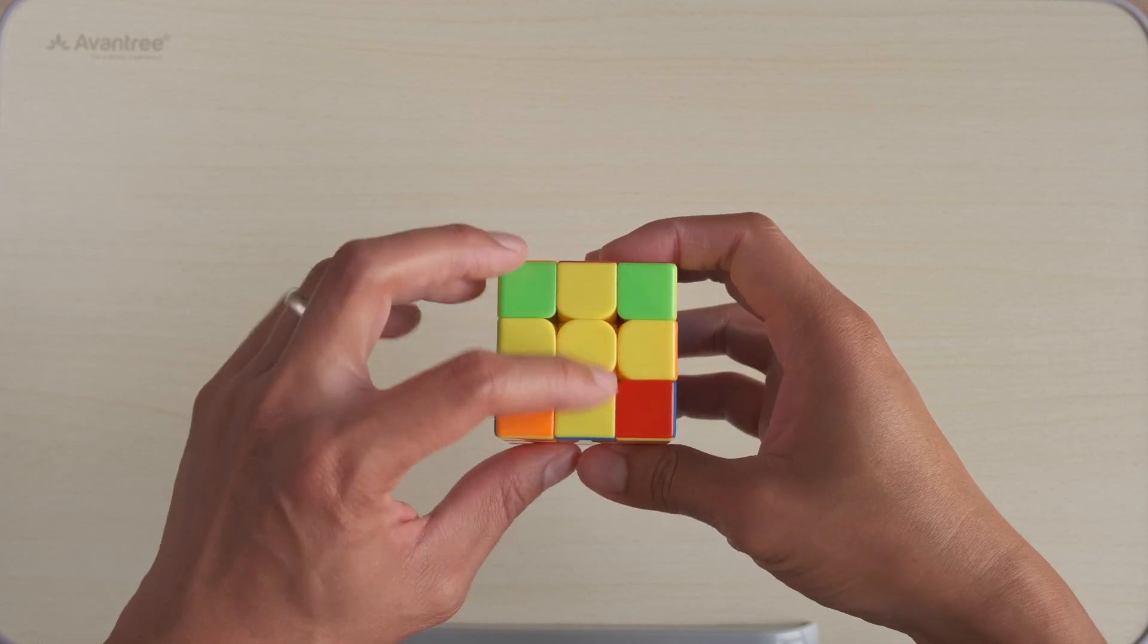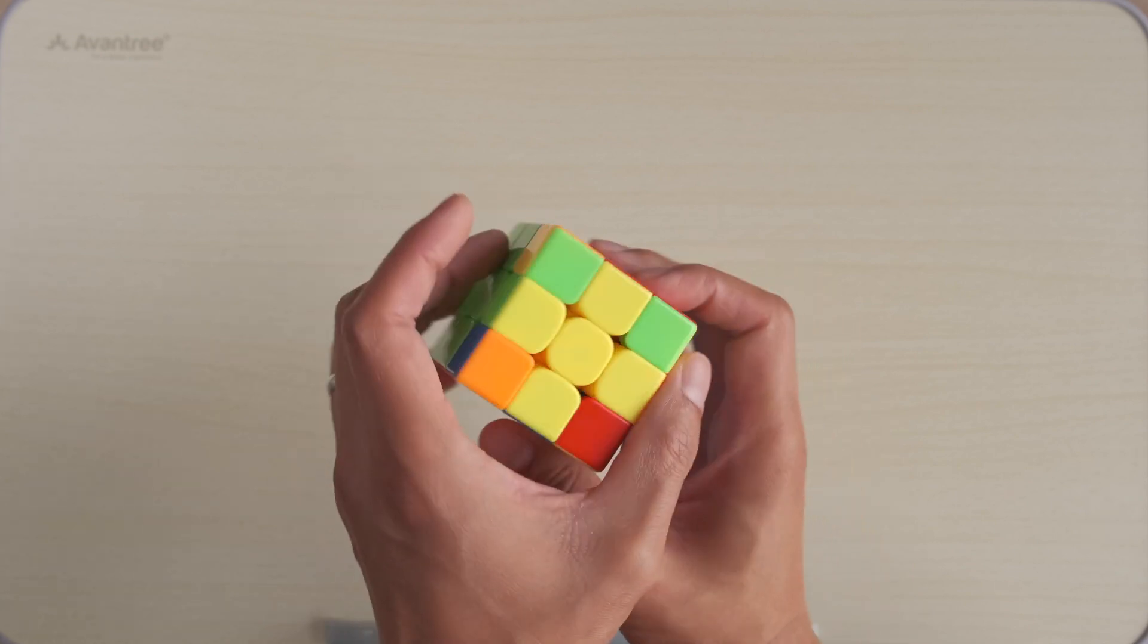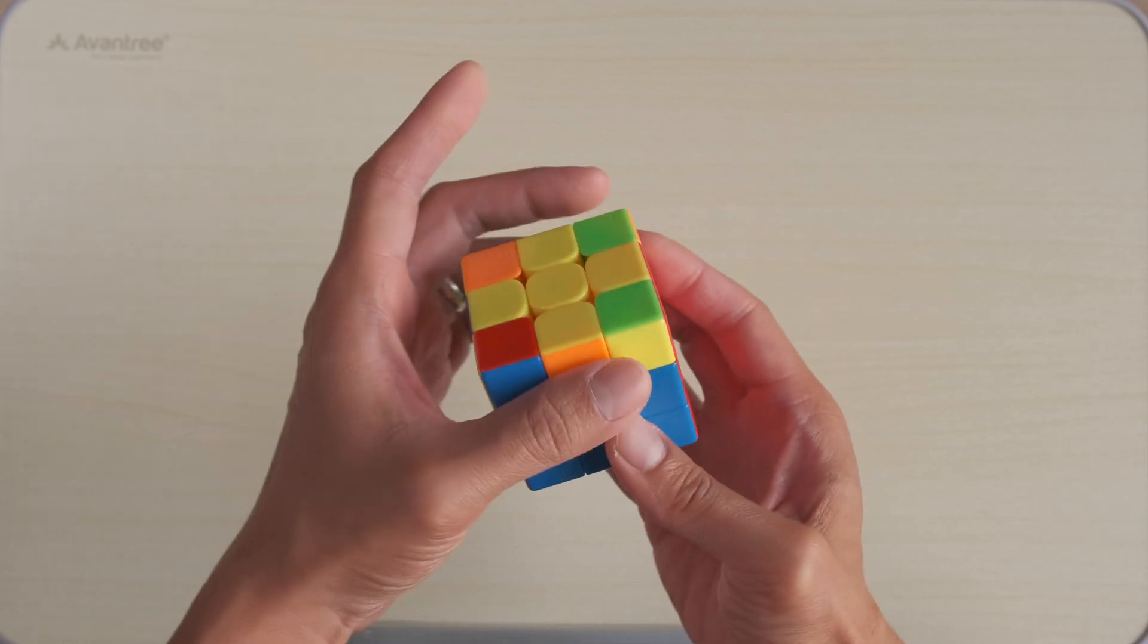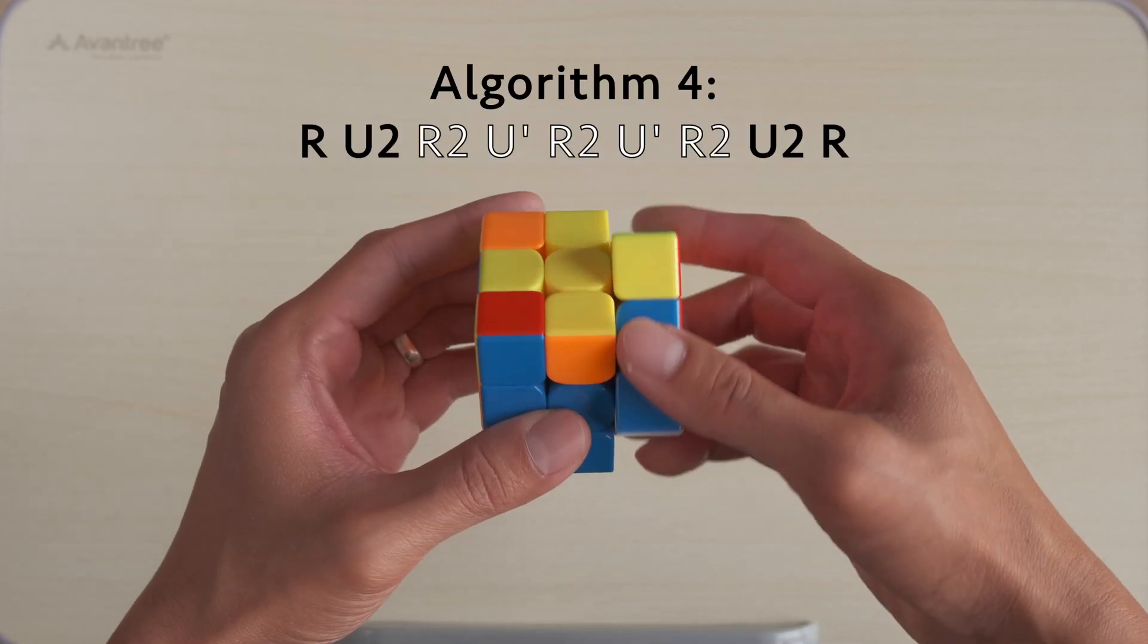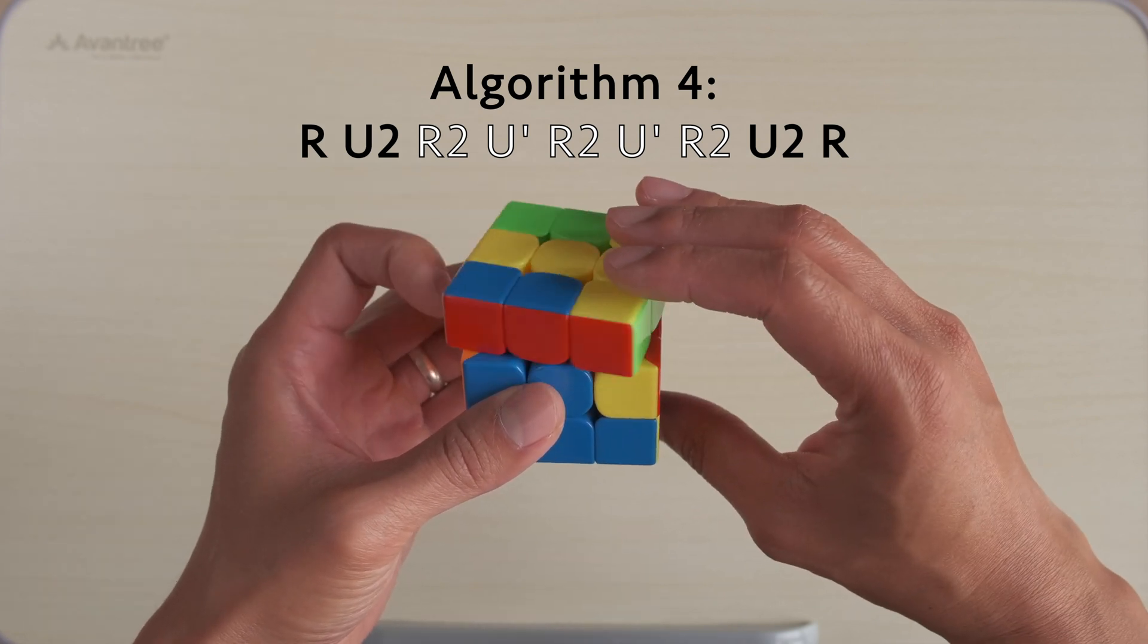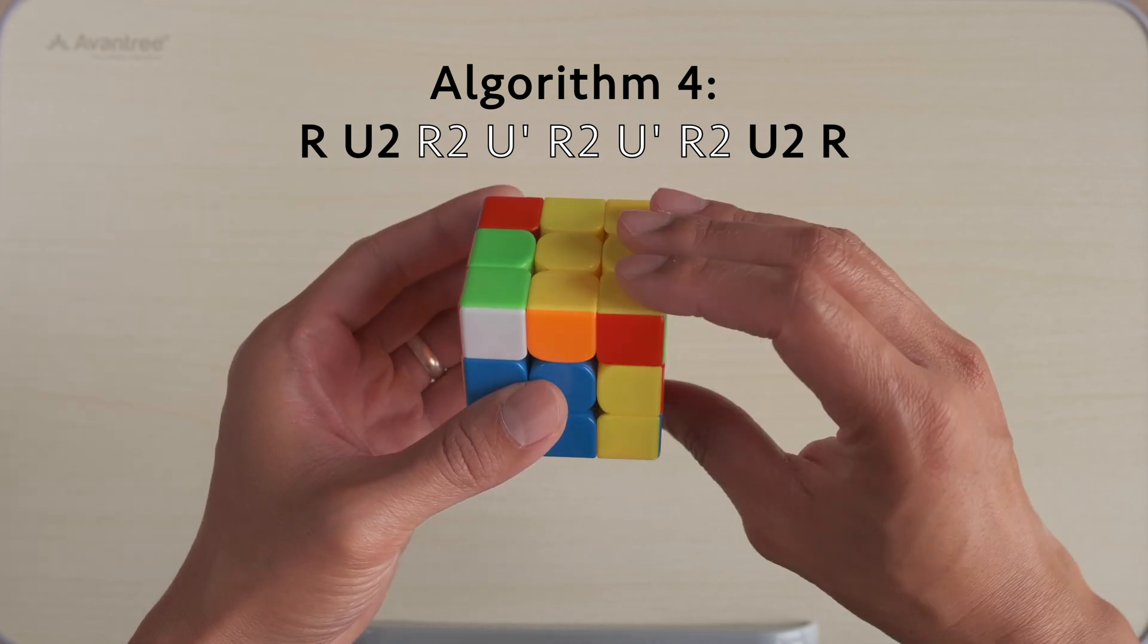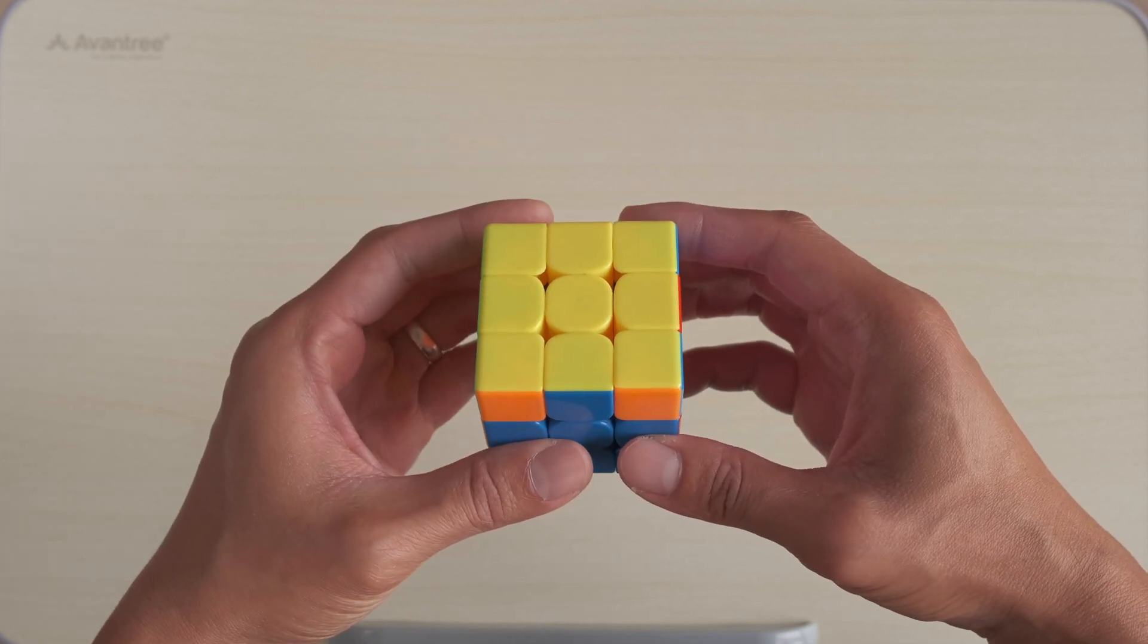The fourth pattern looks extremely similar to the first except there are only two headlights. To do the algorithm, place the headlights facing left, like this, and we do R, U2, R2, U', R2, U', R2, U2, R'.